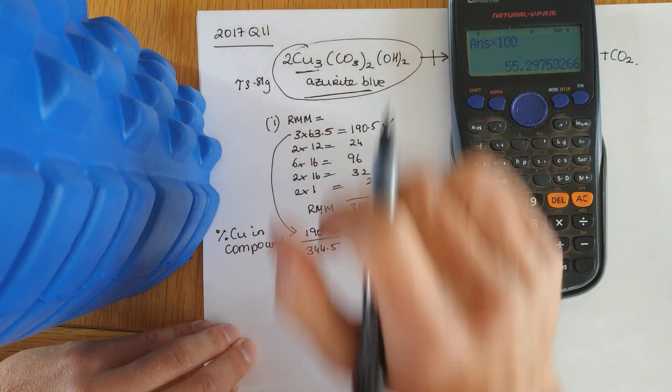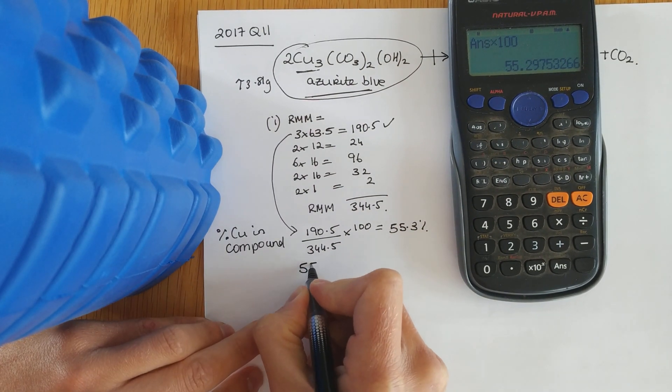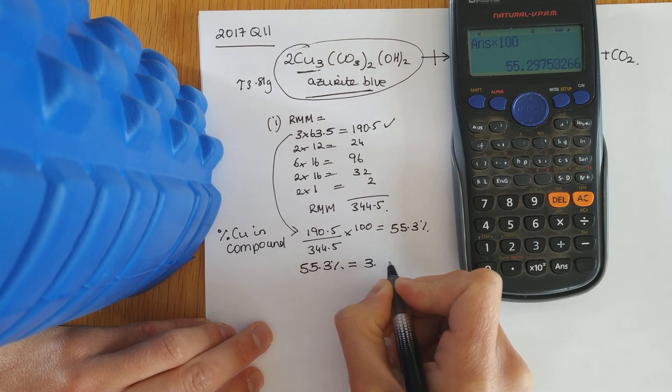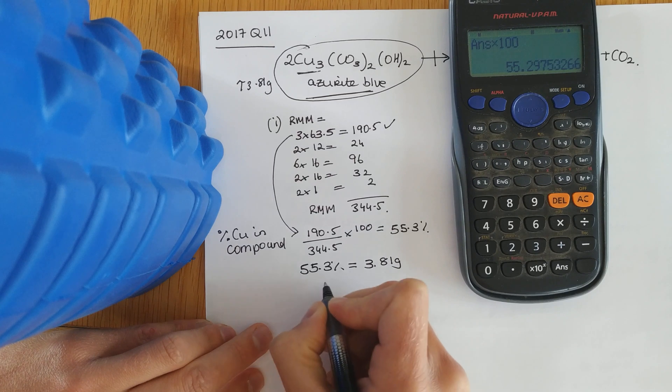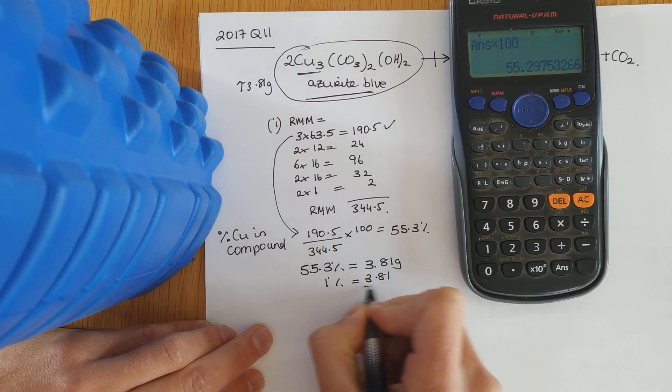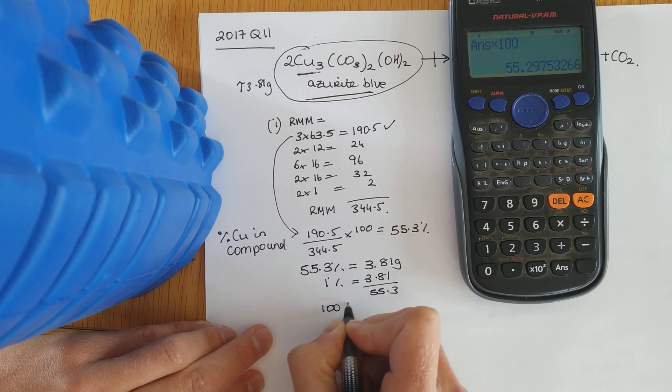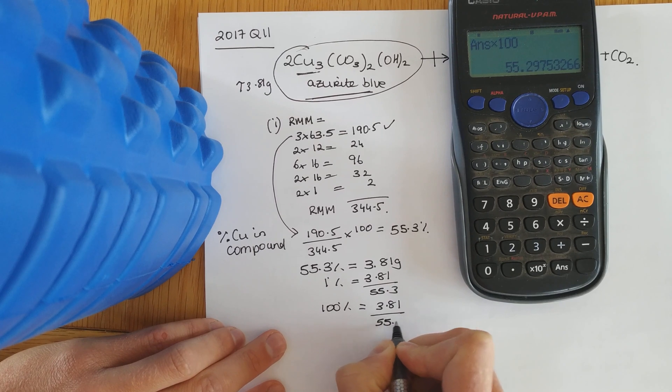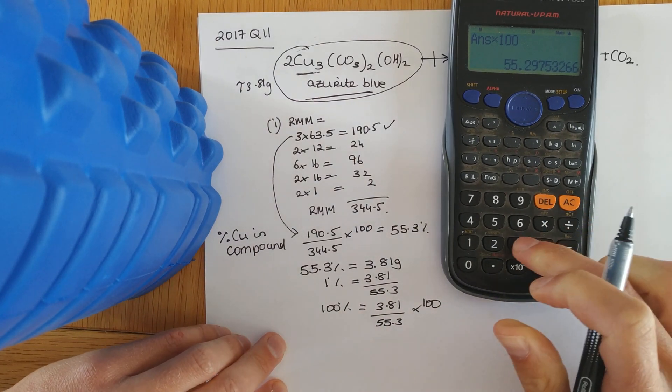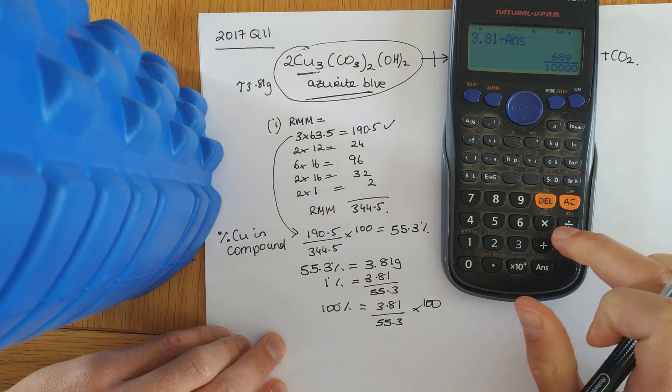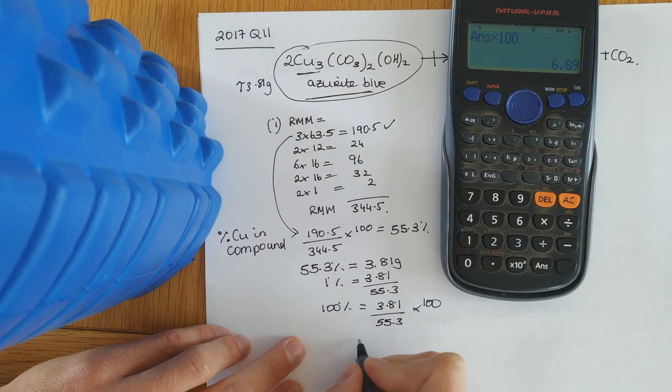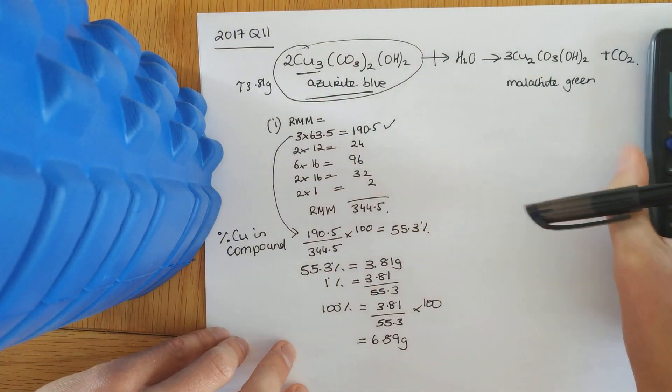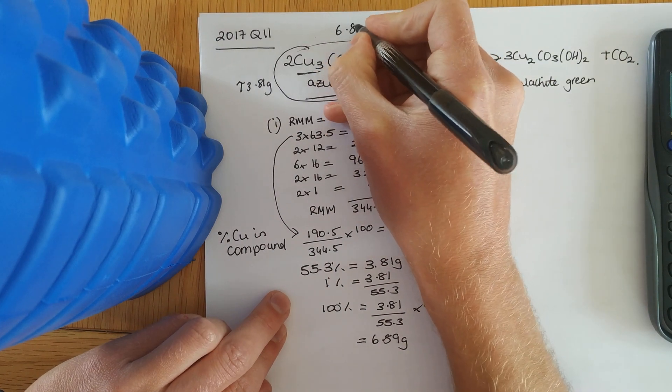Now, we want to work out a hundred percent. And, that will give us the mass of this. So, change your English into mass. 55.3 percent is equal to 3.81 grams. Whatever I'm looking for, I'll put in the left-hand side. Find 1 percent. 3.81 over 55.3. And, then, to find 100 percent, times that by 100. 3.81, 55.3, multiplied by 100. And, I'll give you a range of answers in this, anyway. And, I have 6.89 grams. And, that looks right. It's a bigger mass, anyway. If I've got something like 2, I'd be wary. So, 6.89 grams of this substance I'm starting with.